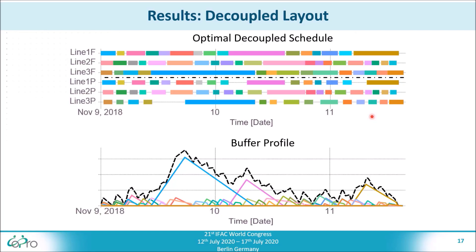In addition, below you can see the resulting buffer profile, where you can see the amount of each individual order stored in the buffer, as well as the total amount of products stored in the buffer, indicated by the black dotted line.